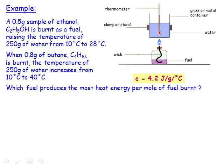Here's a typical question comparing butane to ethanol. A sample of each has been burnt and the corresponding temperature rise measured along with the mass of fuel burnt. The mass of water in the calorimeter was kept constant at 250 grams as a control variable, and the starting temperature of the water was the same — 10 degrees C in each experiment. We want to use the results to decide which fuel produces more energy per mole, in other words, which fuel has the higher molar enthalpy change when it's burnt.